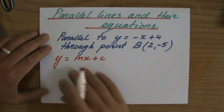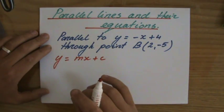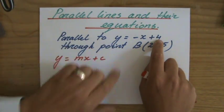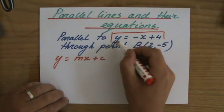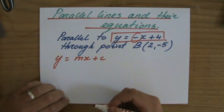Okay, now this is really nice because parallel lines are equally steep, so their gradients are the same. If it has to be parallel to this line, and this one is already written for you in gradient intercept form, what is the gradient of this line? What is the coefficient of x? It's minus 1.